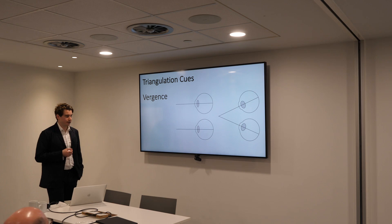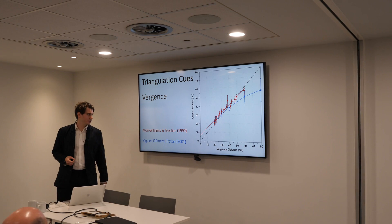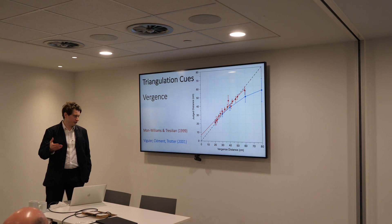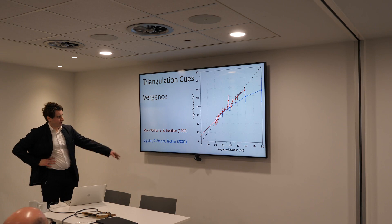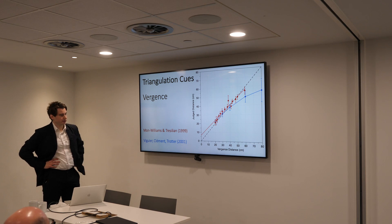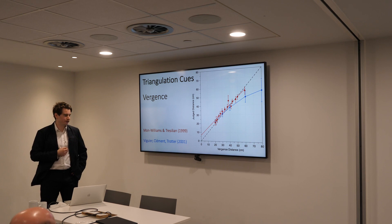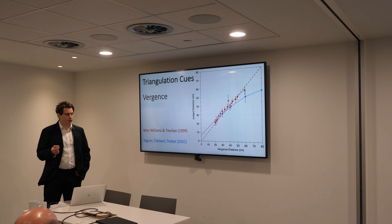All that leaves, so far as triangulation cues are concerned, is vergence — the angular rotation of the eyes. Thankfully, the story here is a lot more positive. Both Mon-Williams and Tresilian and Viguier, Clement, and Trotter looked at the relationship between the vergence angle and the perceived distance of objects and found a very strong, almost veridical relationship within arm's reach. But I want to challenge these results, because I think the problem lies in the way the stimuli are typically presented in these experiments.